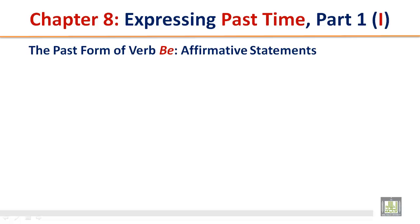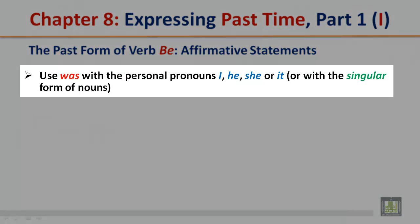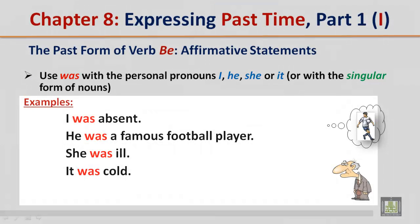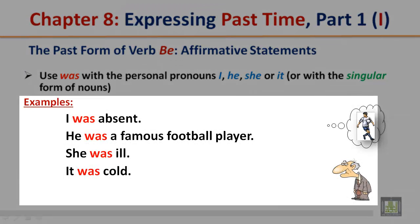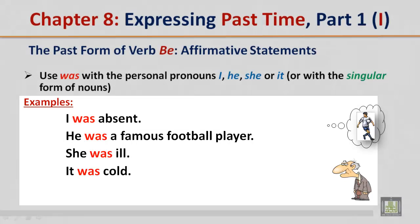The past form of verb be — affirmative statements. Use 'was' with the personal pronouns I, he, she, or it, or with the singular form of nouns. Examples: I was absent. He was a famous football player. She was ill. It was cold.